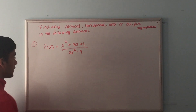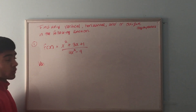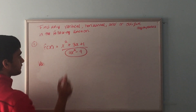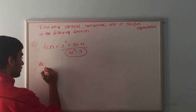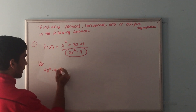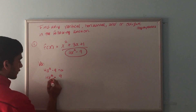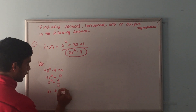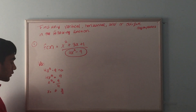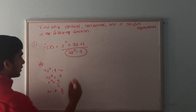Let's first find the vertical asymptote, which is the easiest. For the vertical asymptote, we look at the denominator only. We set the denominator equal to 0: 4x squared minus 9 equals 0, so 4x squared equals 9, x squared equals 9/4, and x equals plus or minus 3/2. So we have two vertical asymptotes: x = 3/2 and x = -3/2.